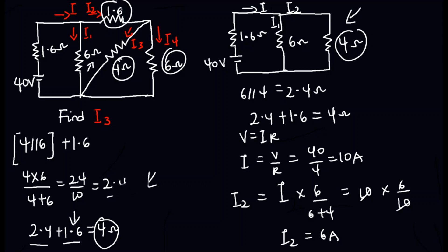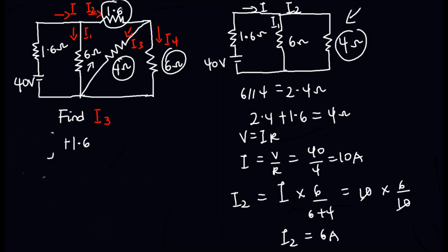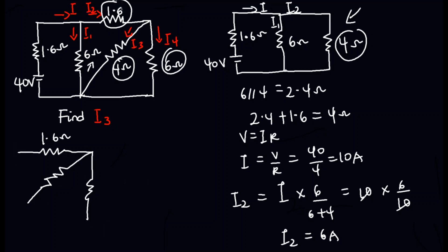Now that we know the current in the 1.6 ohms, we can use that to find i3. I'm going to redraw that part of the circuit. We have the 1.6 ohms, then the 4 ohms where i3 is flowing, and the 6 ohms. Our goal is to find i3, and the incoming current from the 1.6 ohms branch is 6 amperes. We can use current division to find i3.